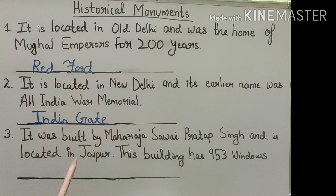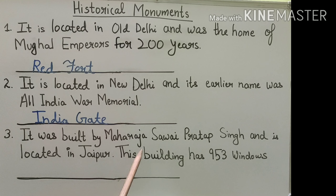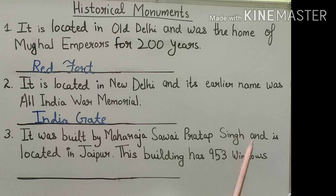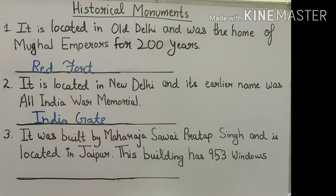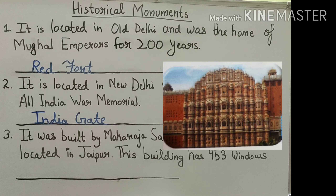This building is located in Jaipur, and it has a total of 953 windows. What is the name of that monument? The answer is Hawa Mahal.